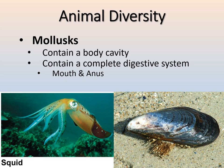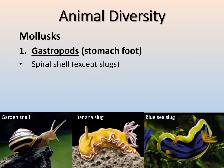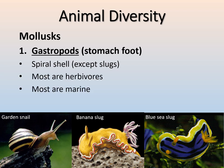The first group of mollusks is gastropods — snails and slugs. 'Gastropod' means stomach foot. Some have a spiral shell like snails, but slugs don't. Most are herbivores eating plants. Most are marine, but we do see land gastropods. They use their stomach foot to crawl, or float in water. Examples include the snail, banana slug, and sea slug — there are many colorful sea slugs out there.